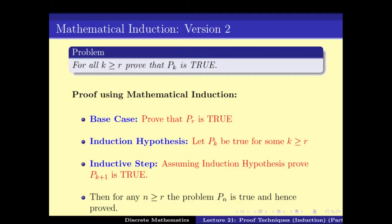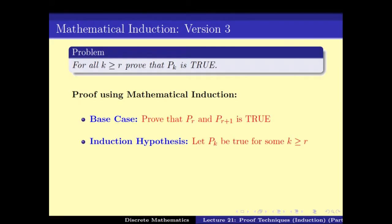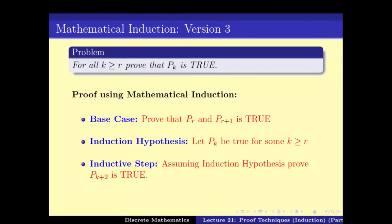Sometimes proving the inductive step — that Pk is true implies Pk+1 is true — can be complicated. One might have to prove that Pk is true implies Pk+2 is true, or something like that. In that case we have to turn to a new version. For example, prove PR and PR+1 is true, and then from Pk is true prove Pk+2 is true.